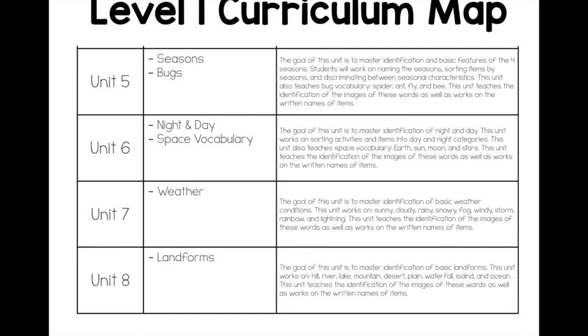Unit six looks at space vocabulary: earth, sun, moon, and stars—not really getting into planets yet, but giving that basic concept of outer space. Unit seven looks at weather. The words are sunny, cloudy, rainy, snowy, foggy, windy, storm, rainbow, and lightning.